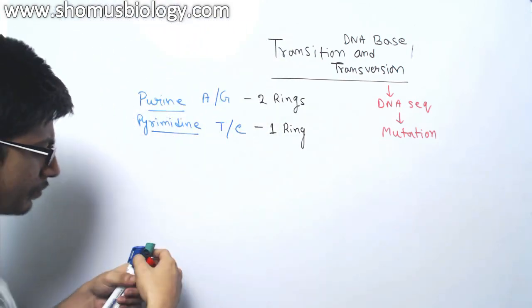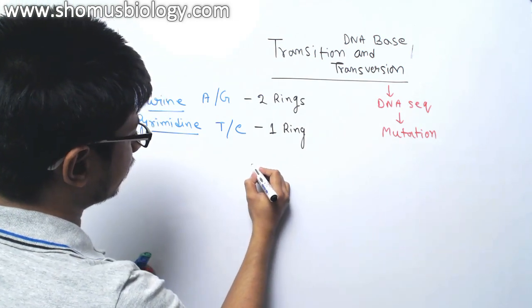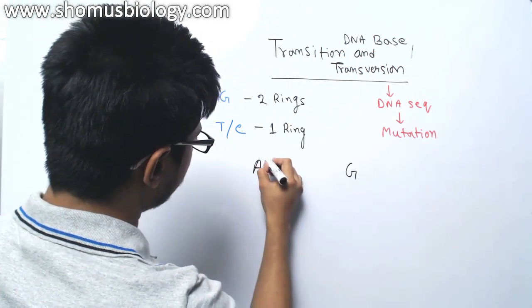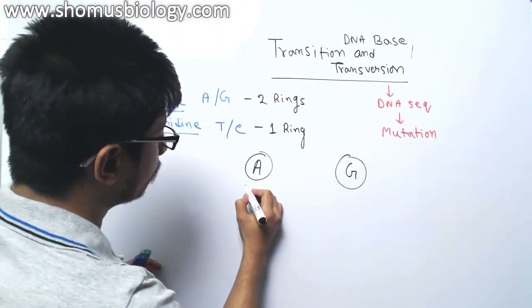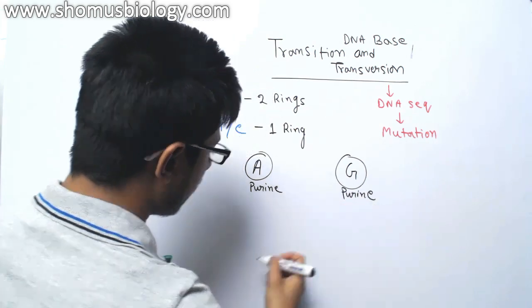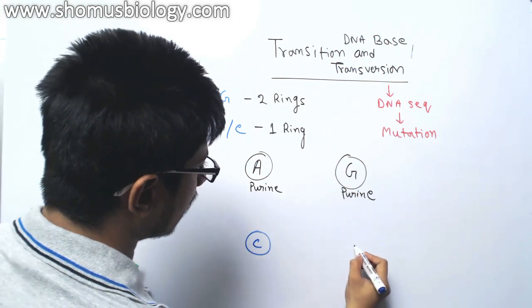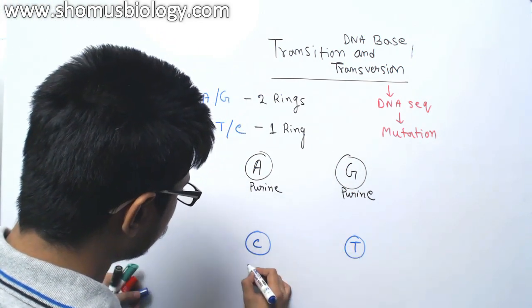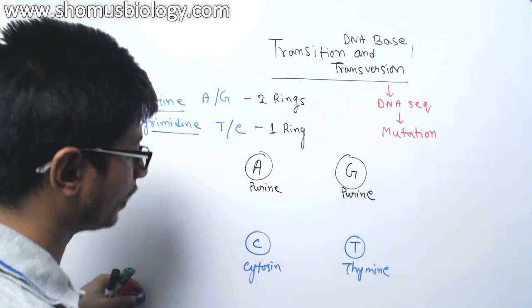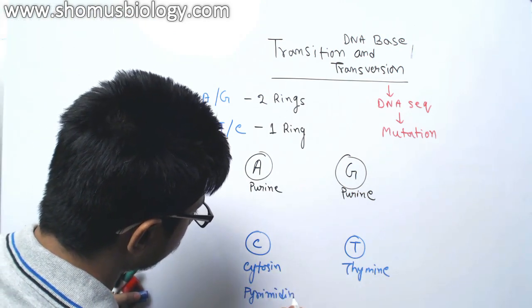If I draw a simple chart, it will be very helpful to explain. Let us say here we have the four bases that we know: adenine and guanine, which are purine, and let me write two other bases: cytosine and thymine. Cytosine and thymine both of them are pyrimidine type of bases.